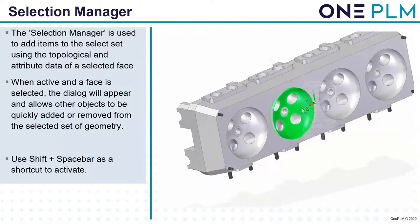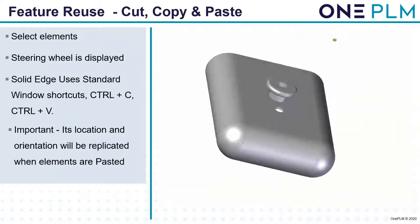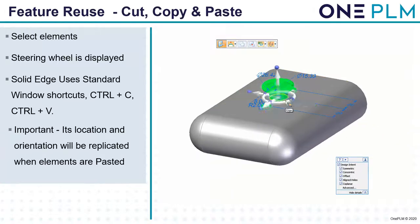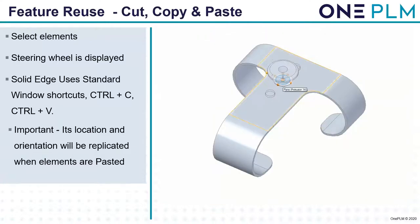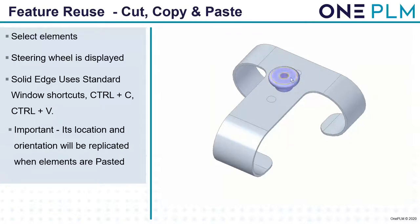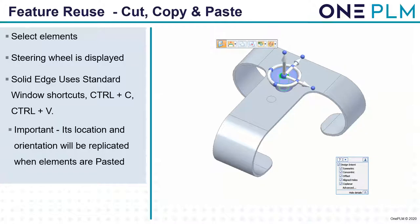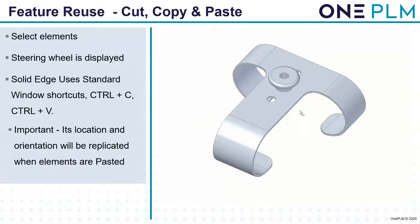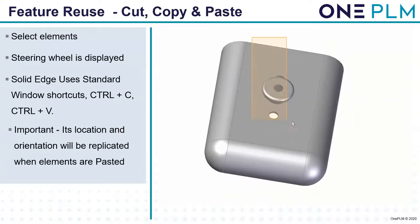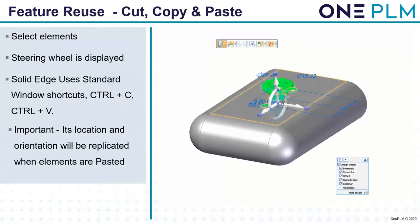Next we'll look at feature reuse — cut, copy, and paste. We select the elements, use the steering wheel to decide where we want the origin, then use standard keyboard shortcuts Ctrl+C and Ctrl+V. We use F3 to link the tool plane to the target plane, then use standard synchronous operations to align it up. The location and orientation will be replicated when the elements are pasted. It's important to make sure it's in the correct orientation, and the last step is attach to make sure that geometry is attached.